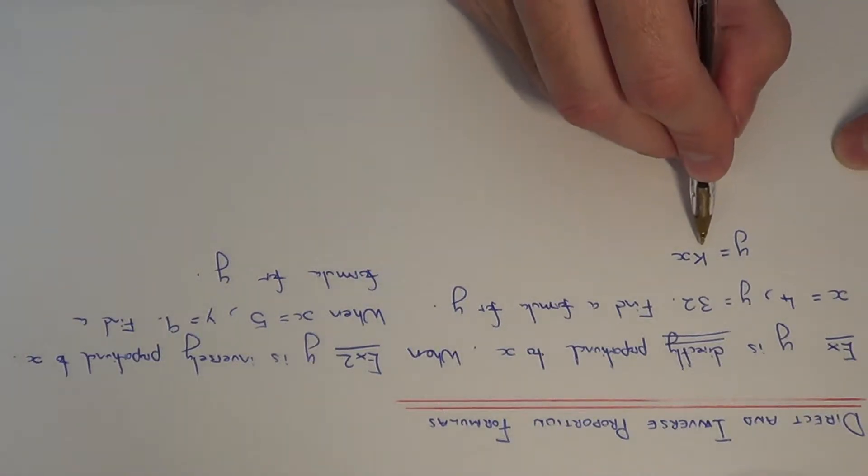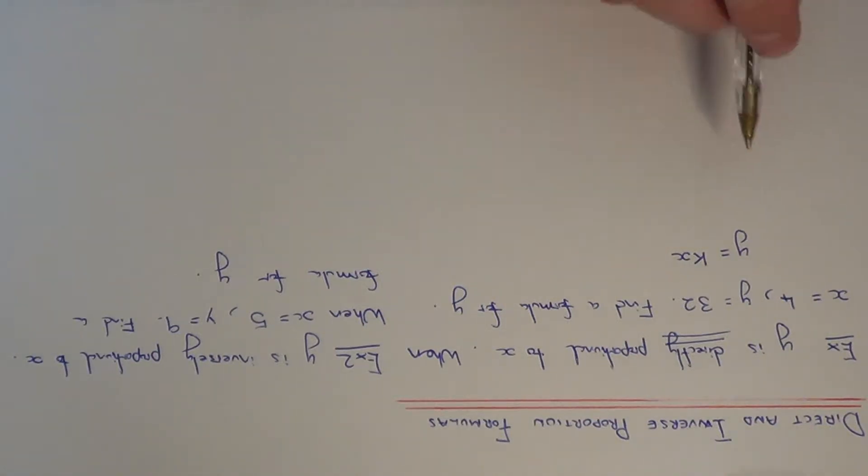We just need to work out the value of k. k is called the constant of proportionality, and to find it we substitute the two given values for x and y into this formula.